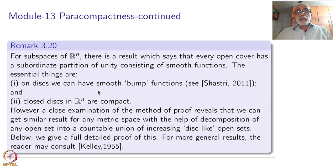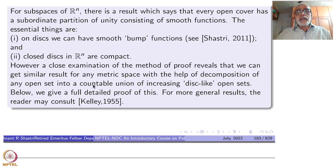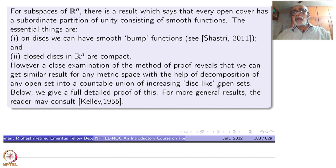The second thing is local compactness in a very special way for Rn, namely the closed disks themselves are compact. If you carefully study the proof given earlier, we can get a similar result for any metric space with the help of decomposition of any open set into a countable union of increasing disk-like open sets. Compactness is not all that necessary here — the metric property will come to help.